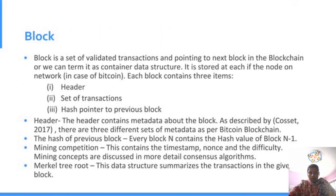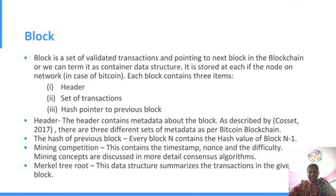The first topic is block. A block is a set of validated transactions and it can be pointed to the next block in the blockchain, or we can term it as a container data structure. Simply, a block consists of a set of transactions with a previous block, next block, and hash pointer. The header contains the metadata about the block. Every block N contains the hash value of block N-1.